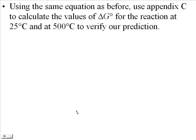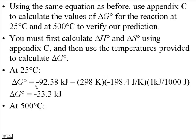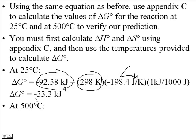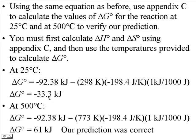Using that same ammonia reaction, we can calculate delta G at two different temperatures. First we find delta H and delta S, then put them into the equation. At 25 degrees Celsius, delta H equals negative 92.38 kJ — note that entropy is usually written in joules, so you must convert units. At 25 degrees Celsius, delta G is negative 33.3 kJ, so it is spontaneous in the forward direction. Using the same values but at 500 degrees Celsius, delta G is positive 61 kJ, so it is not spontaneous in the forward direction.